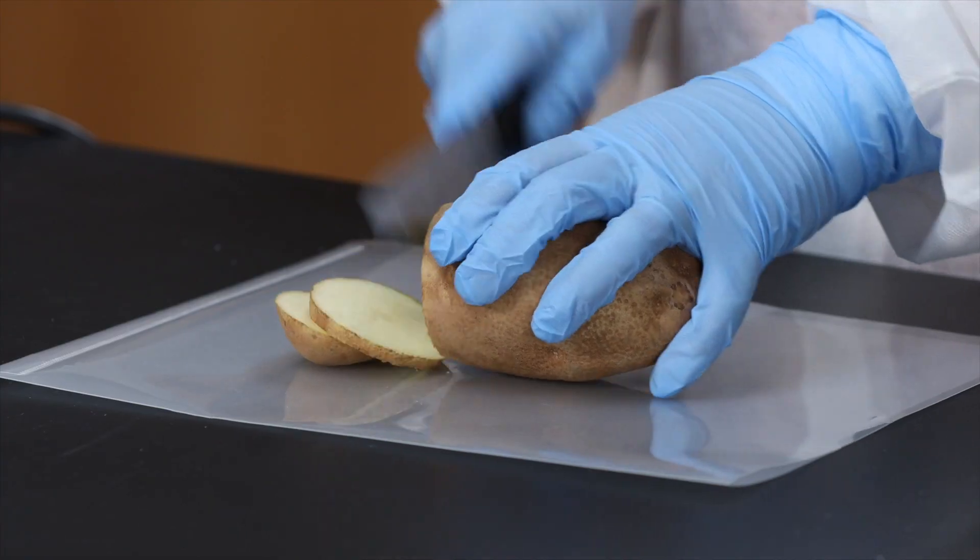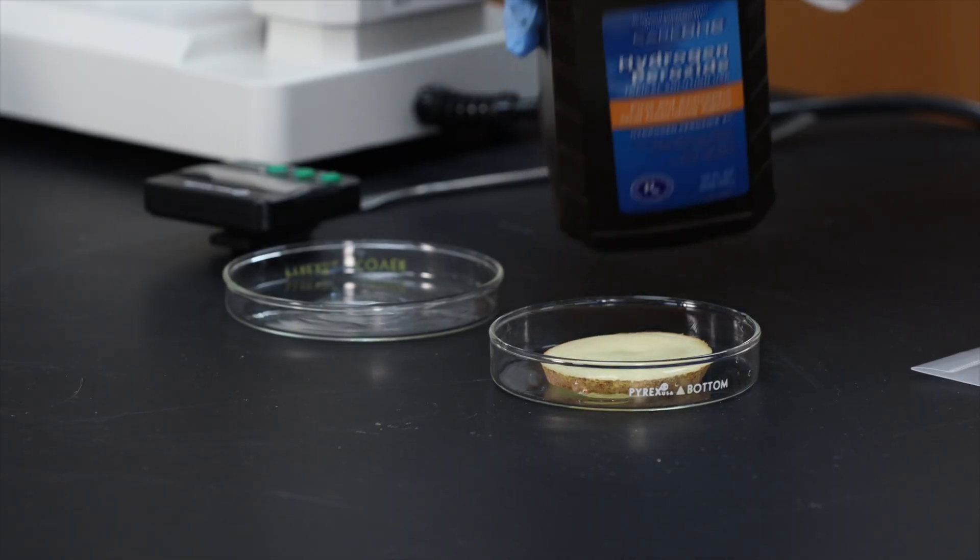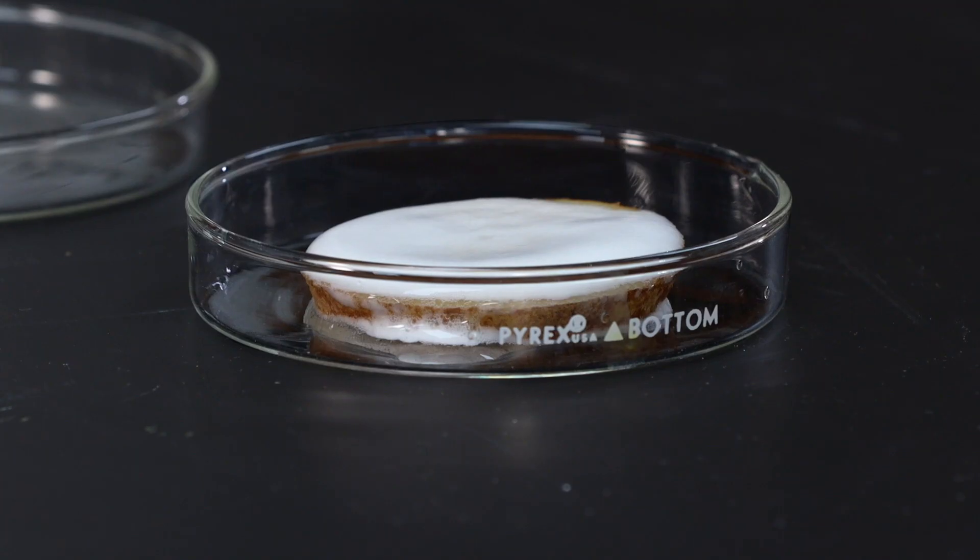Cut a slice of potato and cover it with hydrogen peroxide. The potato begins to fizz as the peroxide interacts with the enzymes.